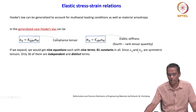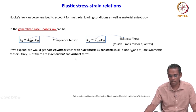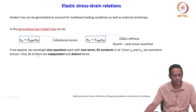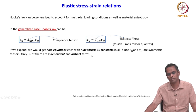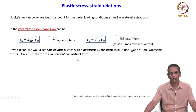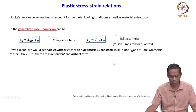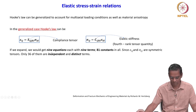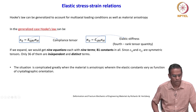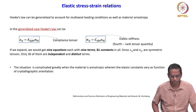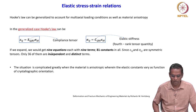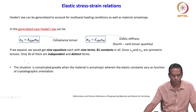Since epsilon_ij and sigma_ij are symmetric tensors, only 36 of the 81 constants are independent and distinct terms. We have already introduced this terminology of symmetric tensors, so we have just had some introduction about all these terms. We will now see how these constants are evaluated.